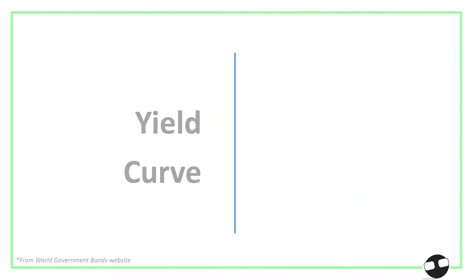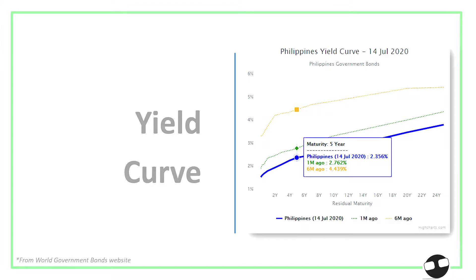Now, what does the bond yield of the Philippines look like? We have here from the World Government Bonds website — you're looking at the Philippines' yield curve for government bonds as of July 14, 2020. If you followed our discussions on the introduction to bonds, you'd recall bond valuation — selling at par, premium, or at a discount. Here you can see that the two-year bond would give around 2%, while the 24-year bond would give around 3.5 to 3.7%. So that's the normal direction of the yield curve.